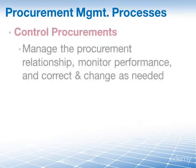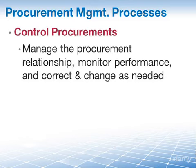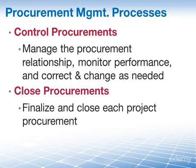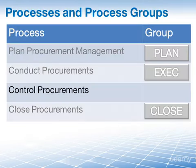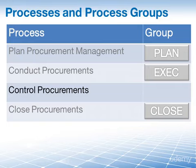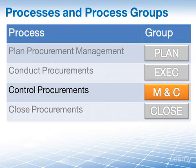From here, we move on to control procurements — the process of managing procurement relationships, monitoring contract performance, and making changes and corrections as appropriate. And lastly, close procurements: the process of completing each project procurement. When it comes to the process groups, plan procurements management is a planning process, conduct procurements is an executing process, control procurements is a monitoring and controlling process, and close procurements is a closing process.